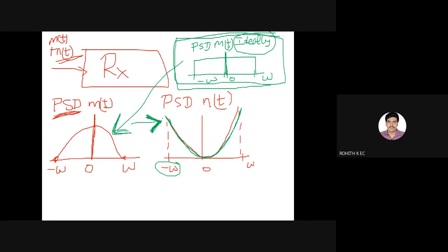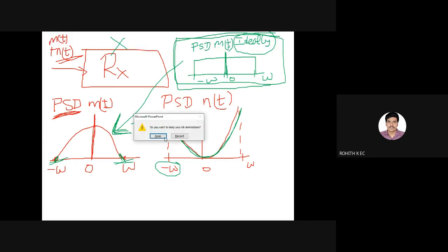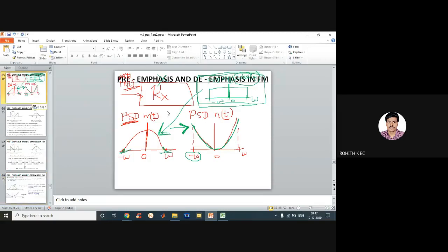When this happens, your receiver will not be able to reliably demodulate the signal because at the desired frequency points minus W to plus W, my power spectral density is less. It will not be able to reliably recover the message signal. So what is the solution to overcome this problem?